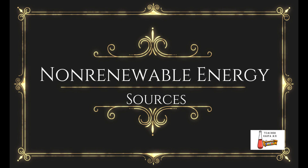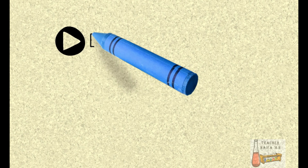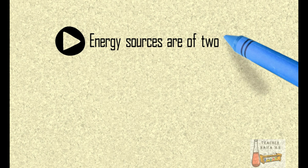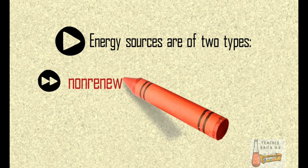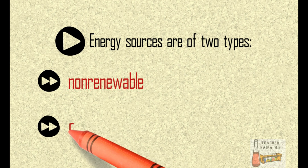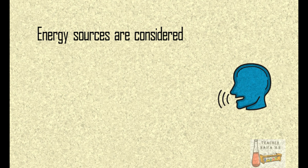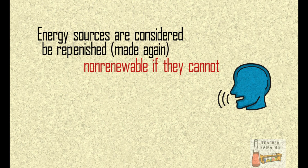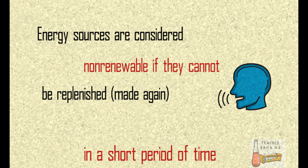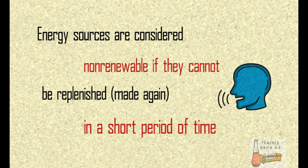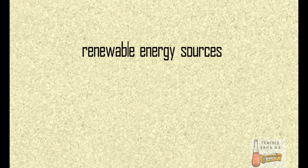Energy sources are of two types: non-renewable and renewable. Energy sources are considered non-renewable if they cannot be replenished, or made again, in a short period of time. Renewable energy sources such as solar and wind can be replenished naturally.